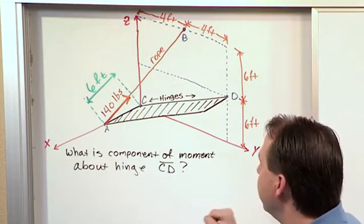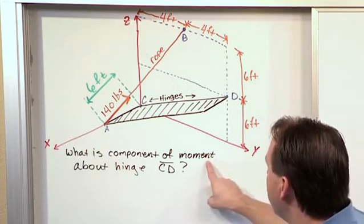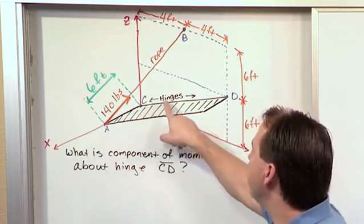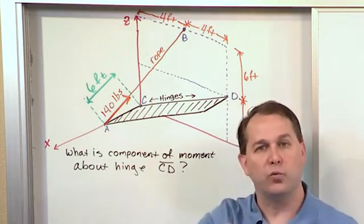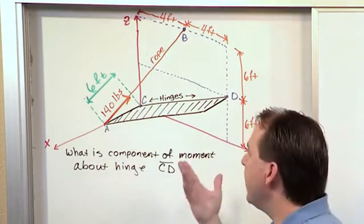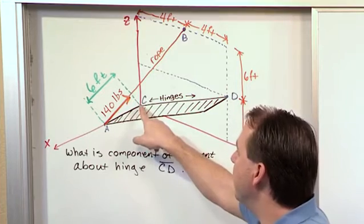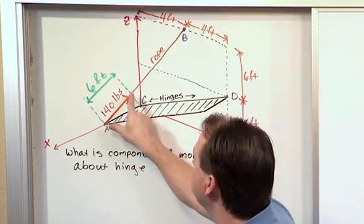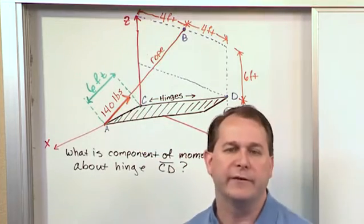But what we want to figure out is what is the component of the moment about the hinge CD? So the hinge CD is the only way in which the door can rotate, but the moment that's developed about point C for instance is basically going to be the cross product of the force with an R vector that we'll define in a minute.